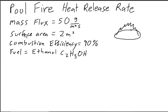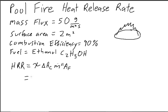What we are going to do is use equation 5.1 from page 159 of Drysdale's An Introduction to Fire Dynamics, 2nd Edition. It says the heat release rate is equal to the combustion efficiency times the heat of combustion times the mass flux times the area of the fuel. So we can start plugging things in — the combustion efficiency is 90%, which is 0.9.